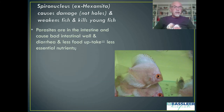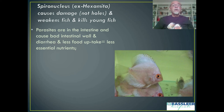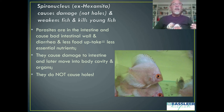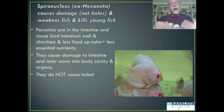The spironucleus parasites are in the intestine, causing damage to the intestinal wall and diarrhea. You can see watery fluid strings hanging from the fish. Less food uptake means fewer essential nutrients are absorbed. Later the parasites can move into the body cavity and organs and spread in the water. They do not cause holes from inside to the outside. If we find parasites in the holes, it's because the fish may have been shipped in a small bag with thousands of parasites floating in the water.